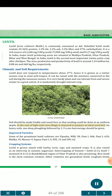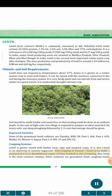Soil should be made friable and weed-free so that seeding can be done at a uniform depth. For light soils, less tillage is required. On heavy soils, one deep plowing followed by two to three cross-harrowings should be given. Improved varieties include: Bipasha, WBL 58, PANTH L 406, PANTH L 639, Malika, BL Masoor 4, Sapna, PANTH L 4, DPL 15 and DPL 62. Cropping systems: Lentil is grown mixed with barley, toria, rape and mustard crops. It is also raised as an intercrop in autumn sugarcane. Intercropping of linseed + lentil (2:1) and lentil + mustard (4-6:1) in Bundelkhand region of Uttar Pradesh is also promising. Rice-lentil is the most common rotation; others include groundnut-lentil, sorghum-lentil, pearl millet-lentil, maize-lentil, cotton-lentil, kharif fallow-lentil (rain-fed), and rice-lentil plus mustard.